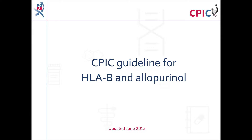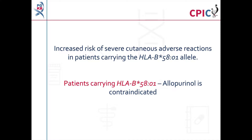This is a summary of the CPIC dosing guideline for allopurinol and variation in the gene HLA-B. This guideline was last updated in June 2015. Due to the increased risk of allopurinol-induced severe cutaneous adverse reactions in patients carrying at least one HLA-B*5801 allele, the guideline contraindicates allopurinol in these patients.